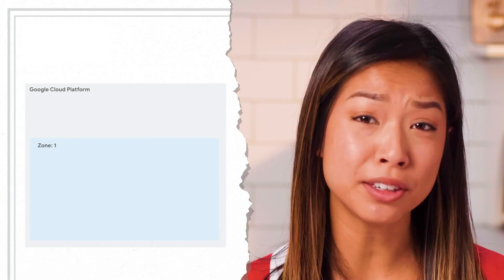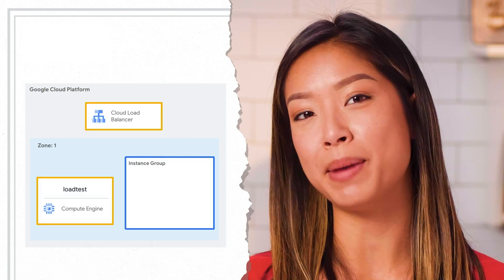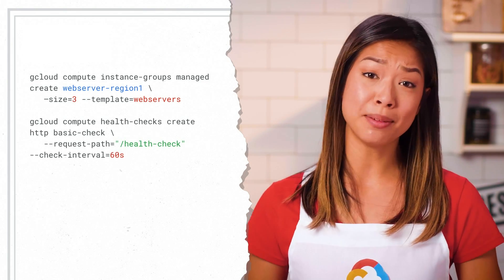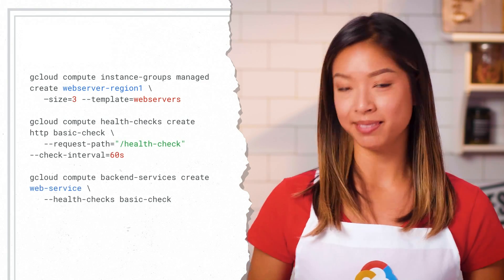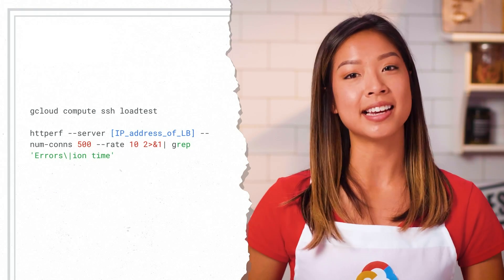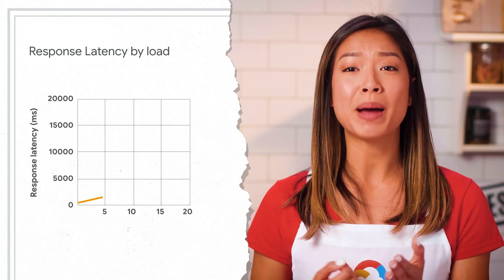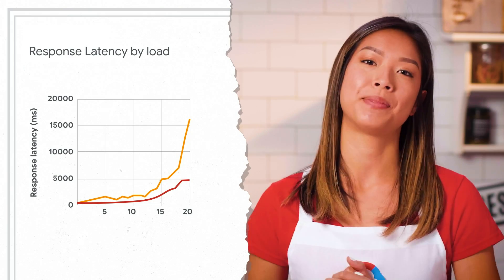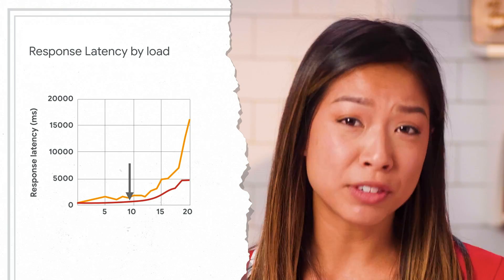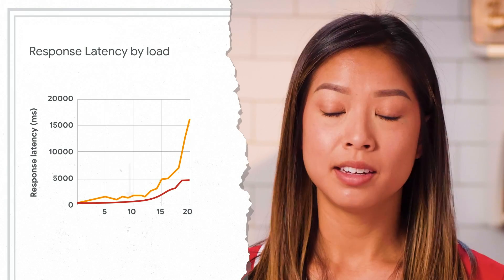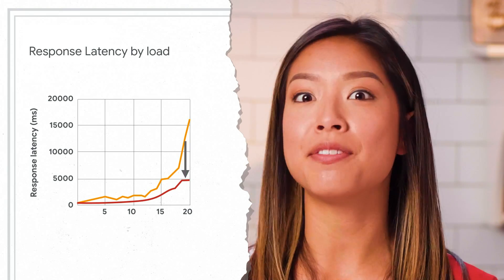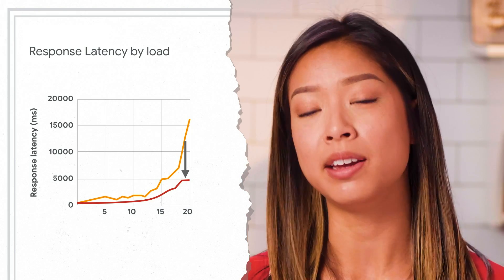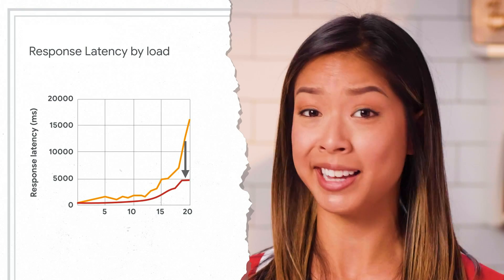Now let's put a single-region load balancer in front with the managed instance group in the same region. Once you create the HTTPS load balancer with three VMs in the same region using a managed instance template and health checks, you can run the same load tests against the load balanced system. As the load increased past serving capacity, the average and maximum request latency increases sharply. With 10 requests per second, the average request latency is close to 500 milliseconds, but with 20 requests per second, the latency is 5,000 milliseconds — a tenfold increase. Your dog fans are not going to be happy when you have a flash buy-one-get-one-free sale on dog birthday cakes.